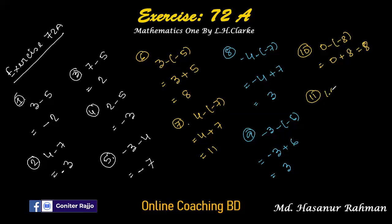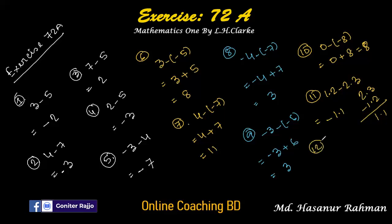Number eleven: 1.2 minus 2.3. We subtract 1.2 from 2.3: 3 minus 2 is 1, 2 minus 1 is 1, so the result is 1.1. But the sign of the larger number is negative, so we put a negative sign: the answer is minus 1.1.